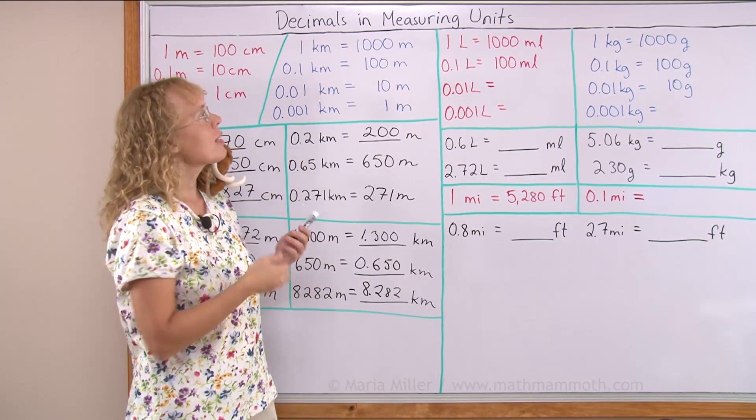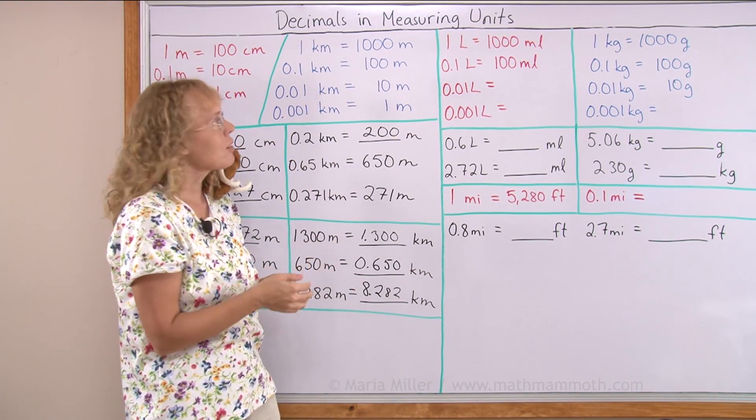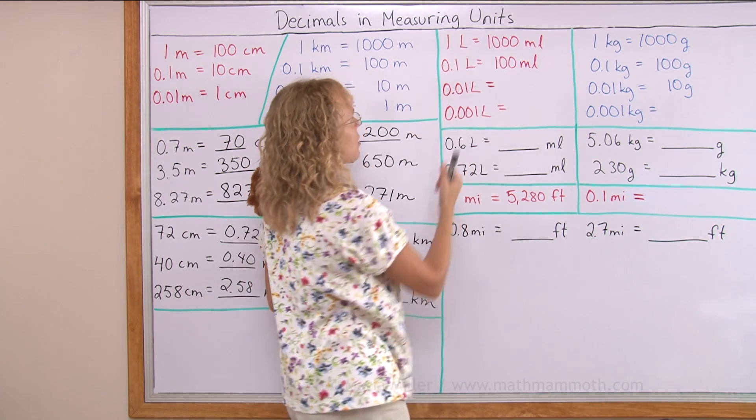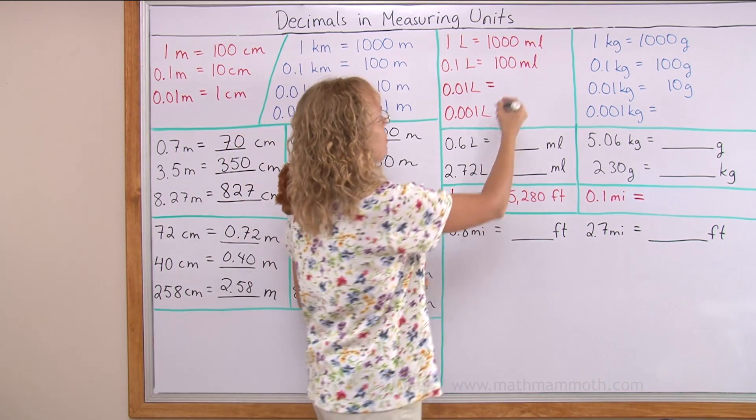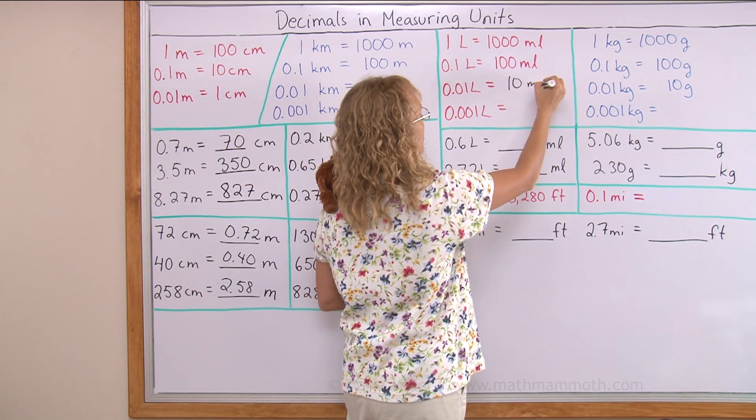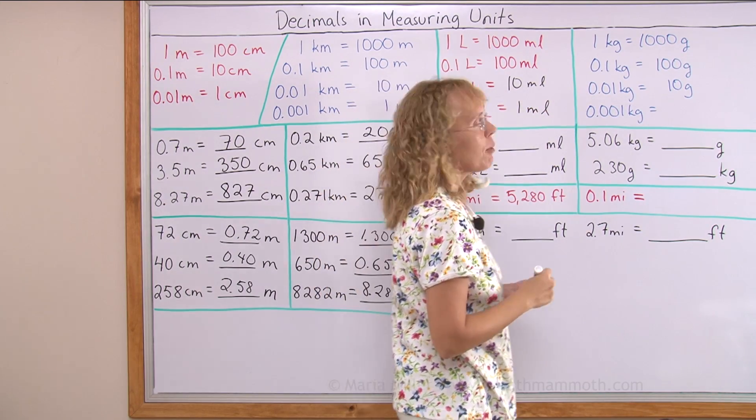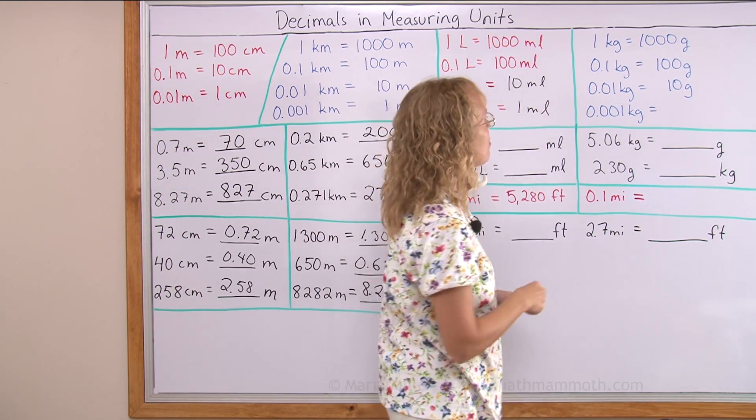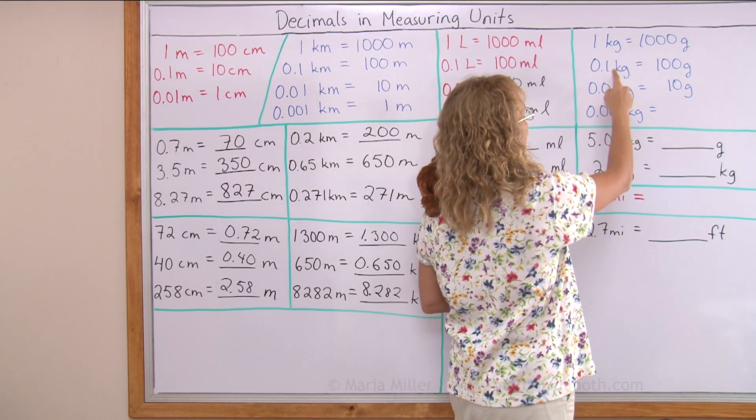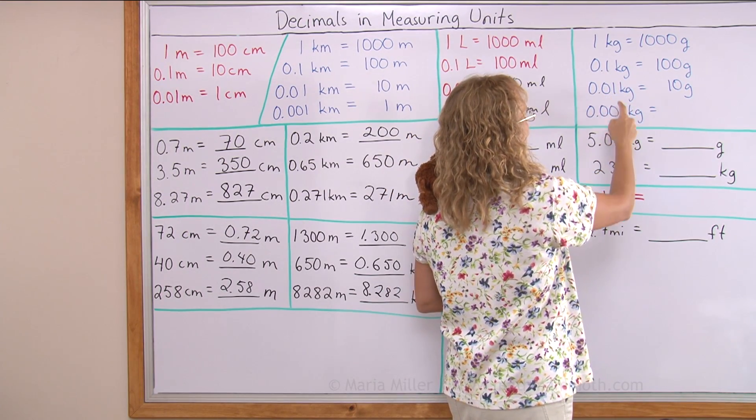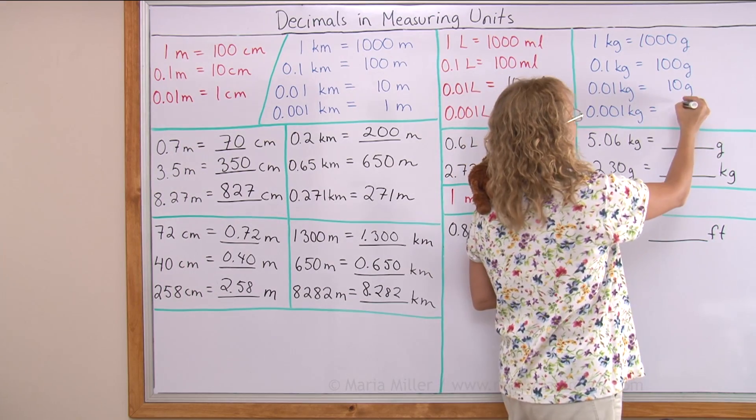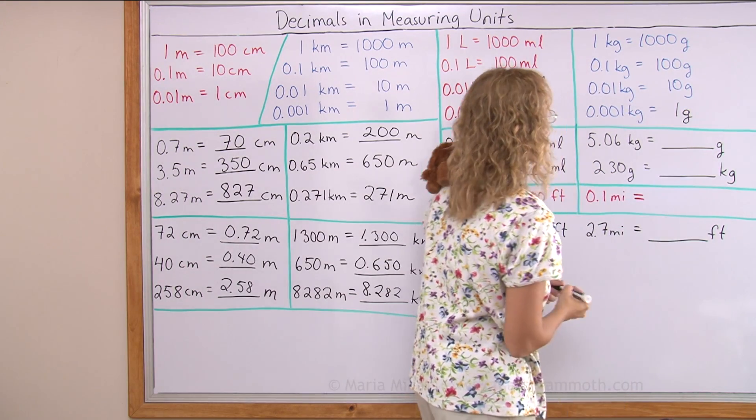The same thing works with liters and kilograms. Because one liter is thousand milliliters. So if I fill this in, I get here 10 milliliters and here one milliliter. Over here one kilogram is thousand grams. So I can look at the tenth part of a kilogram, hundredth part of a kilogram, or thousandth part of a kilogram, which would be one gram.